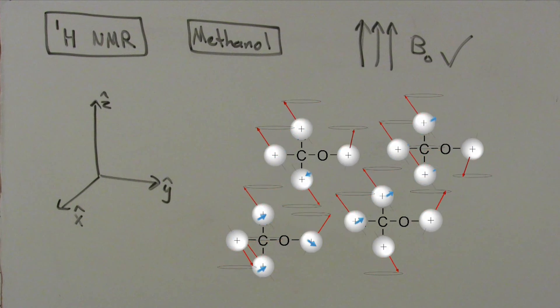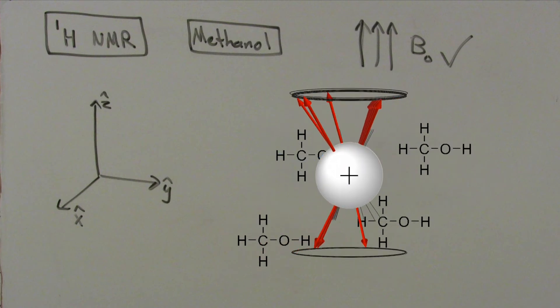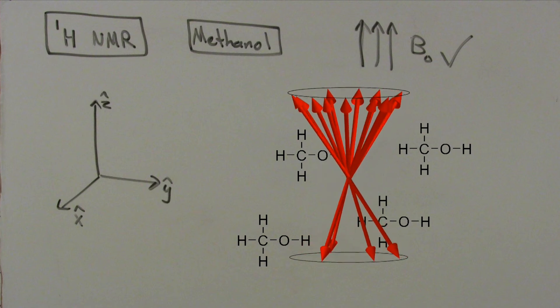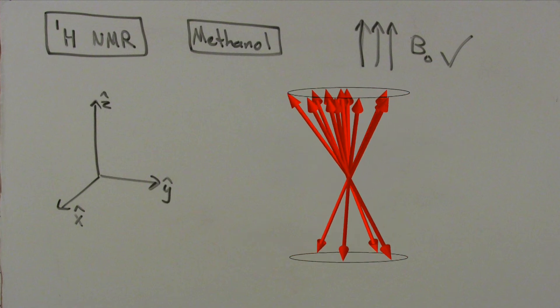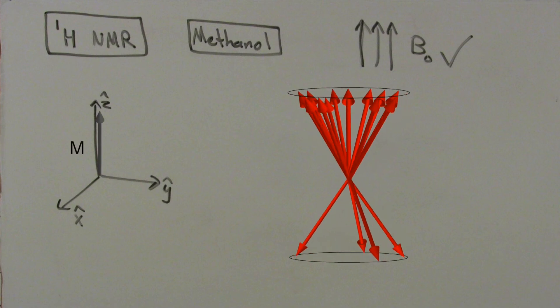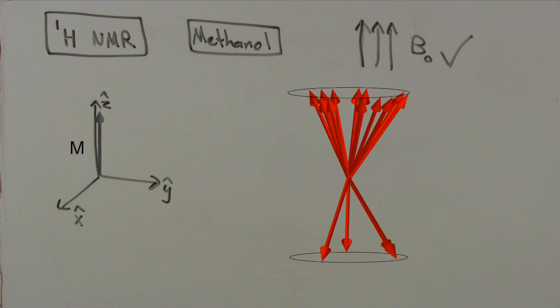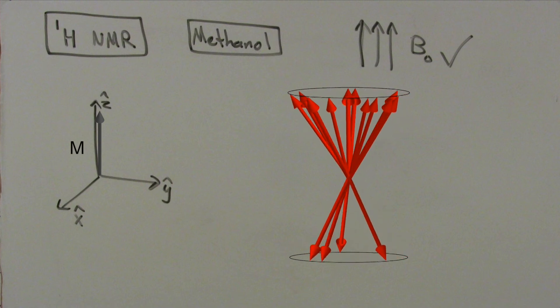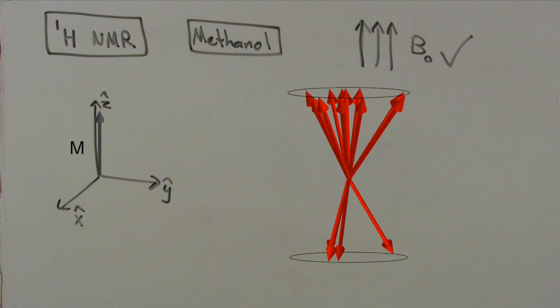Since there is an energetic preference for the dipoles of the nuclei to align with the field, we have a few more nuclei in the up spin state than the down spin state. As a result, the net dipole vector, showing the sum of all dipoles, points in the positive z-hat direction. This net dipole vector encodes all of the precessional frequencies. In order to read this vector, we have to get it moving.